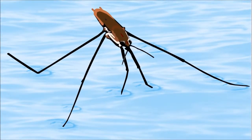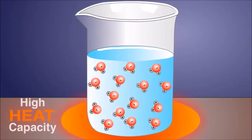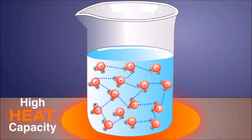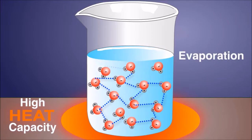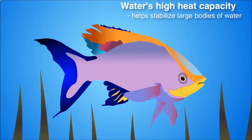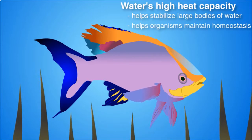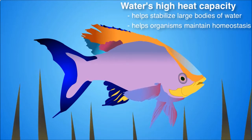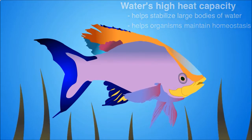Because water molecules at the surface are more strongly attracted to each other than to the air above, water clings tightly at the surface. This explains why water beads on waxy surfaces and why water-striding insects can walk on water. Water also has a high capacity for heat: its many hydrogen bonds let it absorb a large amount of heat without changing state, stabilizing temperatures of lakes and oceans and helping organisms maintain their internal temperatures.